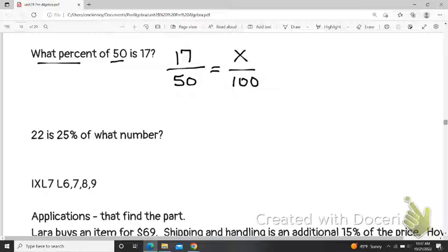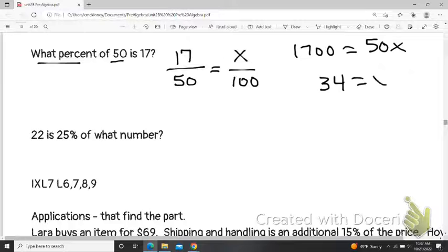Yes, it's there with the word is, but 50 is also next to is. So that's why I meant is isn't always a very reliable way. Now we'll still cross-multiply and then we'll divide.